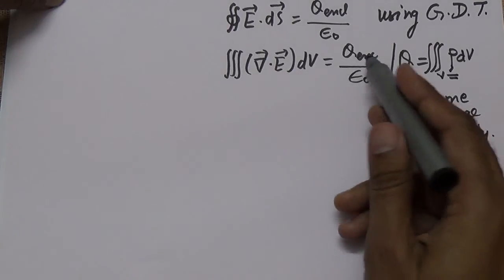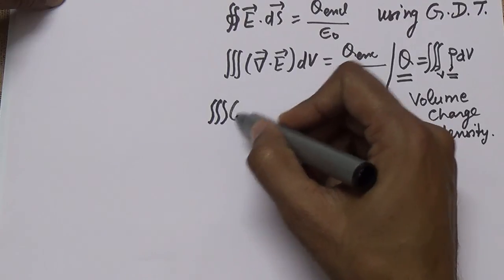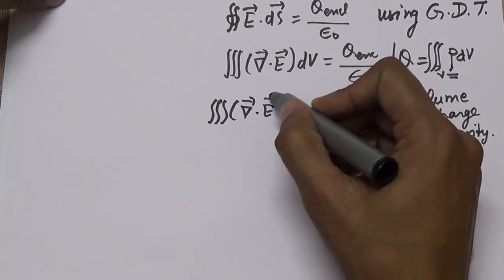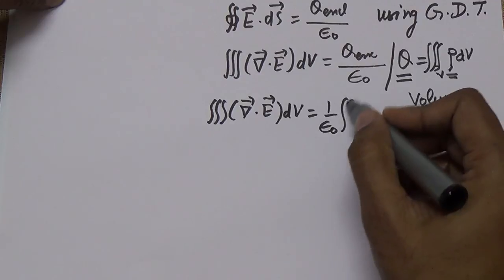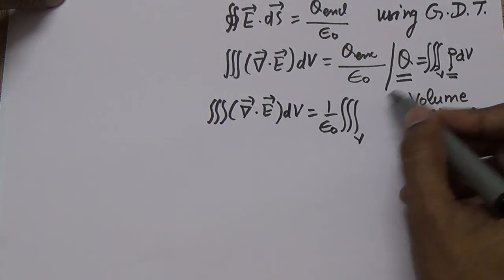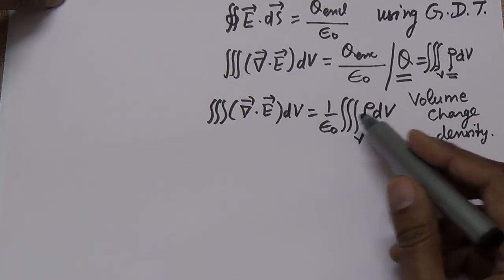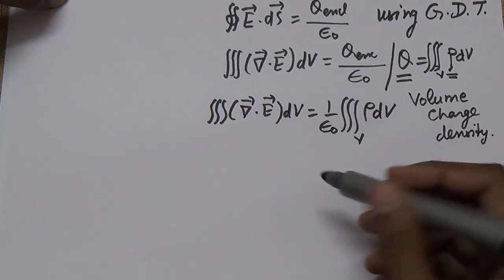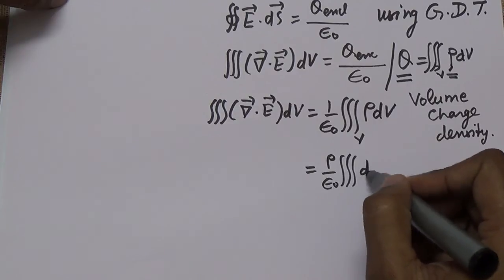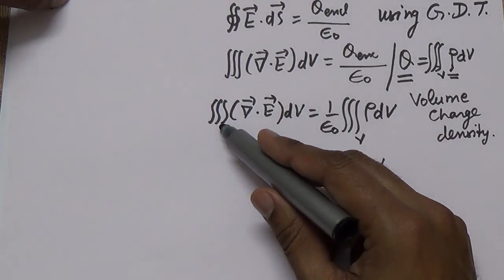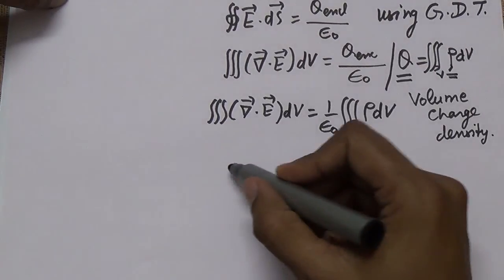Instead of Q, we can now write: the volume integral of divergence of E dV equals 1/epsilon-naught times the volume integral of rho dV. Since rho is the volume charge density and is constant, it comes out of the integration, giving rho/epsilon-naught times the volume integral dV. Now both sides are volume integrals and are comparable.